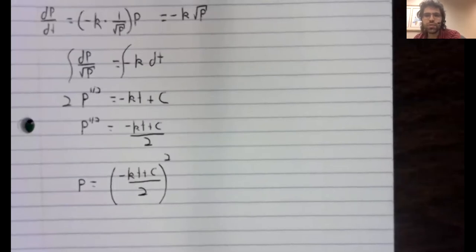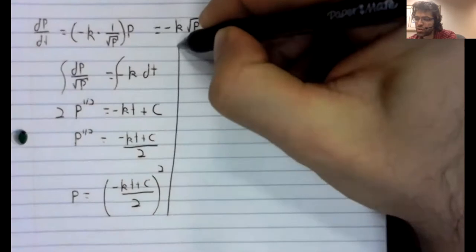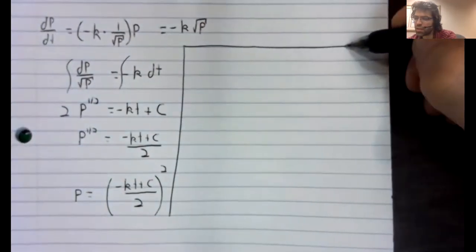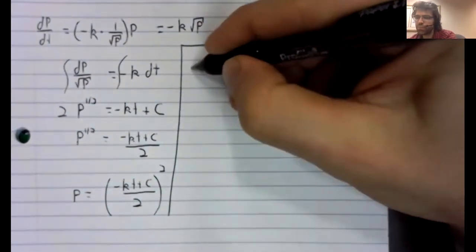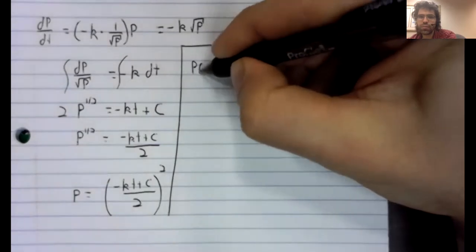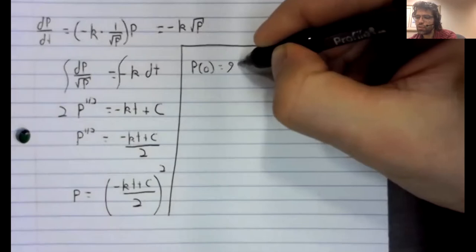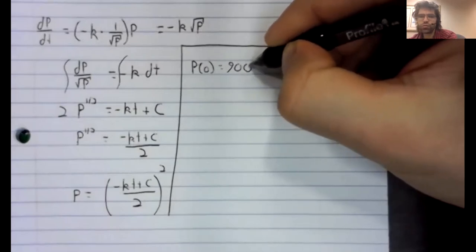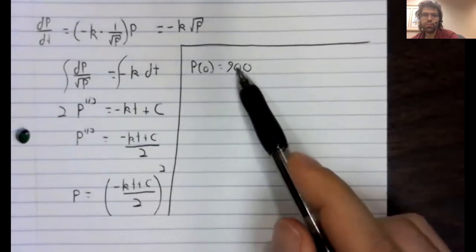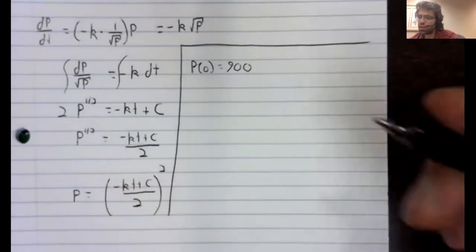Which we do want to know if we're going to set this equal to zero and get a numerical answer back. P of zero equals 900. Well, you let t be zero, P be 900.